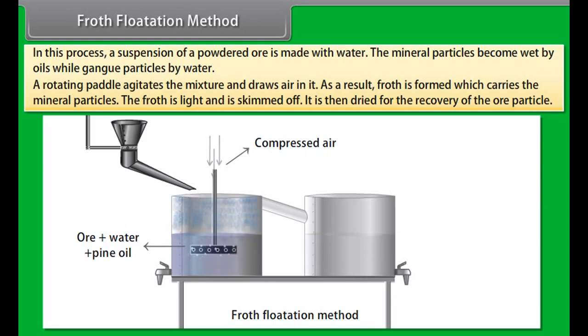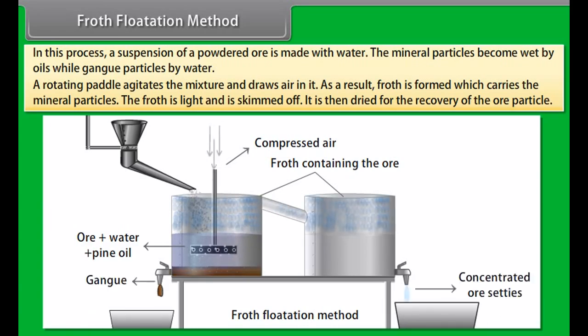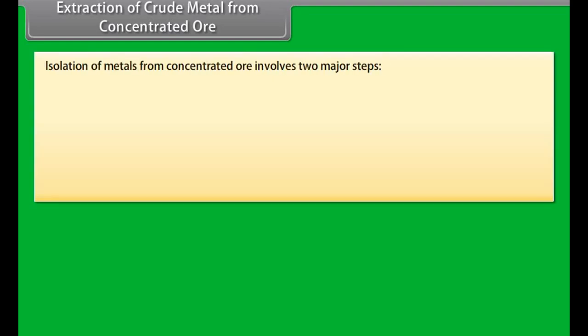In this process, a suspension of a powdered ore is made with water. Collectors like pine oil, fatty acids and xanthates are added to it. Froth stabilizers like cressols and aniline stabilize the froth. The mineral particles become wet by oils while gang particles by water. A rotating paddle agitates the mixture and draws air in it. As a result, froth is formed which carries the mineral particles. The froth is light and is skimmed off. It is then dried for the recovery of the ore particles.